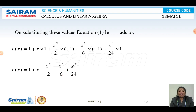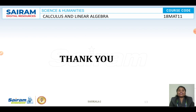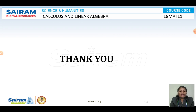Substituting into the Maclaurin series: F(x) = 1 + x·1 + (x²/2)·(−1) + (x³/6)·(−1) + (x⁴/24)·1, which simplifies to 1 + x − x²/2 − x³/6 + x⁴/24. In these two videos, all types of Maclaurin series problems have been covered. The last problem may also be asked as a 'prove that' question. Thank you.